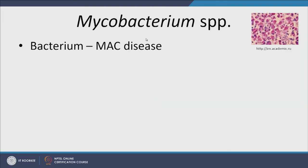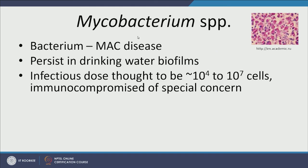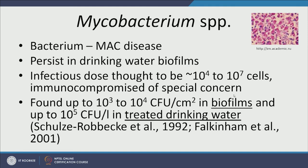Next, we have Mycobacterium species — tuberculosis mycobacterium is also a member of this genus, but here we're talking about mycobacteria that grow in biofilms. These can survive in drinking water biofilms and don't cause very severe sickness, but they especially affect immune-compromised people. The infectious dose is comparable to that of Legionella pneumophila. They are usually found in biofilms at concentrations up to 10^3–10^4 CFU per cm², and up to 10^5 CFU per liter in treated drinking water — a very high concentration.